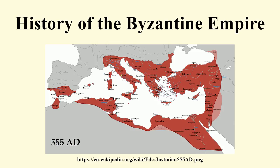Belisarius was eventually recalled by Justinian. In early 549, the arrival of the Armenian eunuch Narses in Italy with an army of some 35,000 men marked another shift in Gothic fortunes. Totila was defeated and died at the Battle of Busta Gallorum. His successor, Teia, was likewise defeated at the Battle of Mons Lactarius. Despite continuing resistance from a few Goth garrisons and two subsequent invasions by the Franks and Alemanni, the war for the Italian peninsula was at an end.